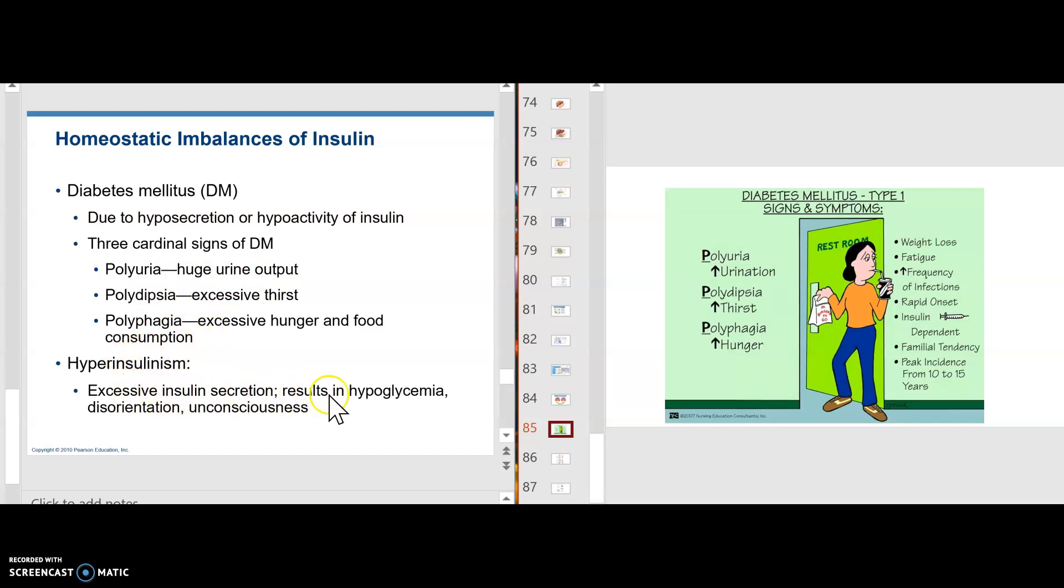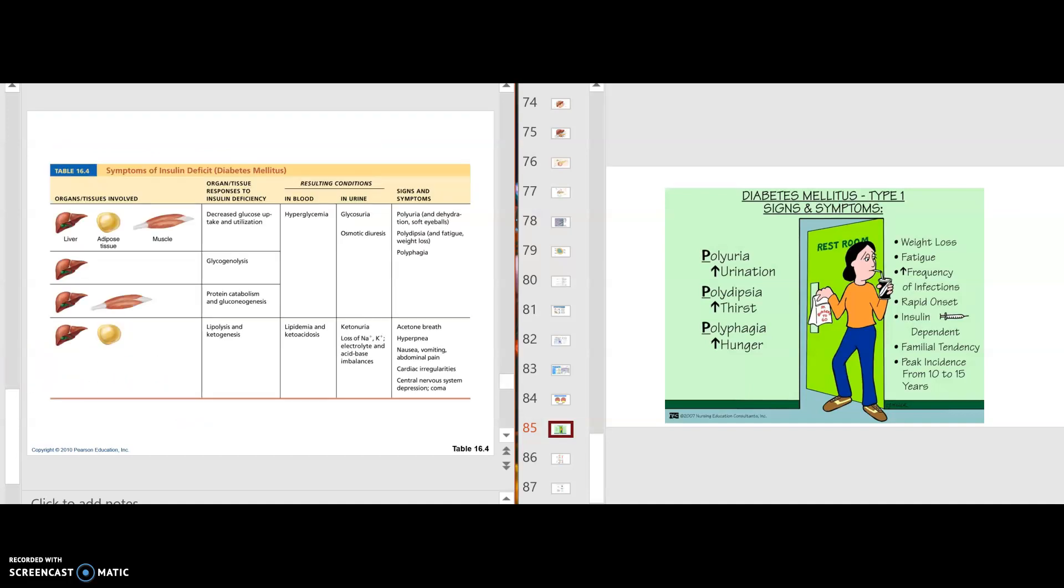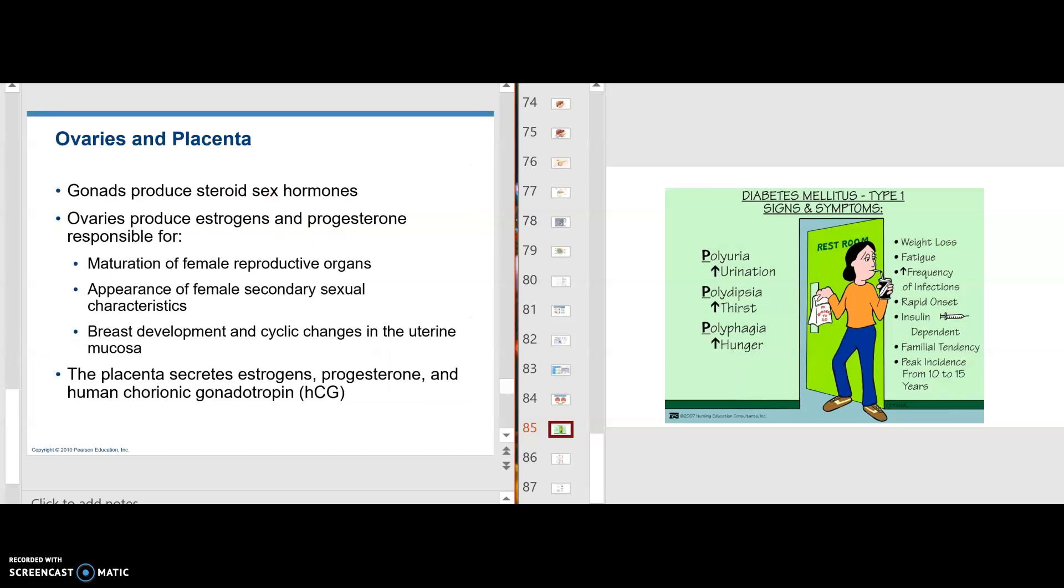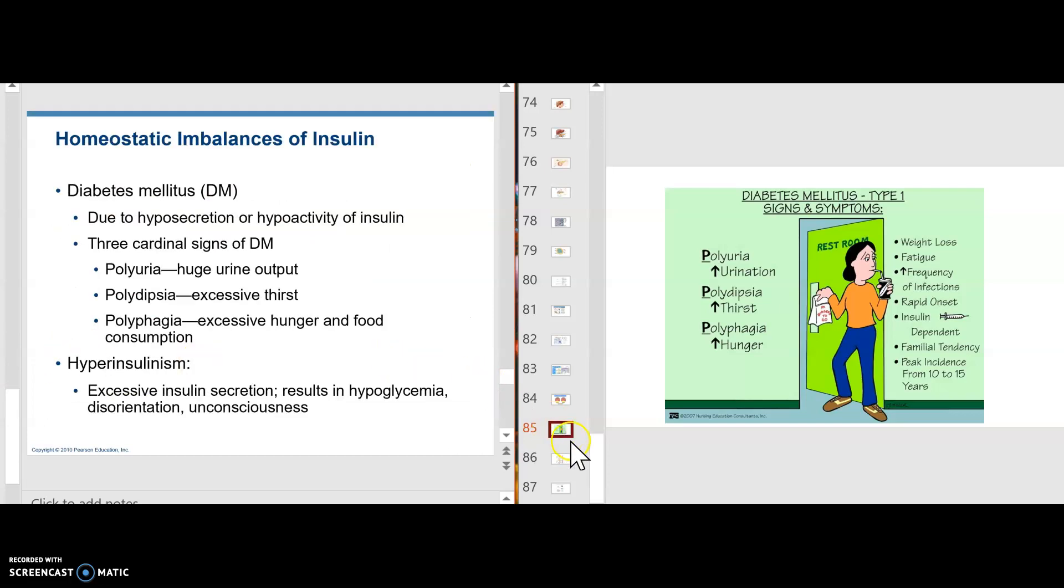Hyperinsulinism. Excess insulin secretion results in hypoglycemia. This can occur, but I'll tell you when it mainly occurs, when somebody's taking insulin and they over-inject. So we talked about this particular aspect. You can look at that.